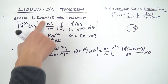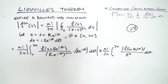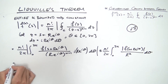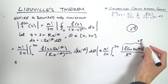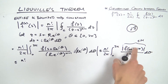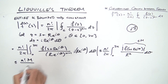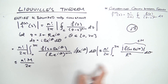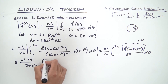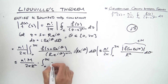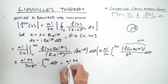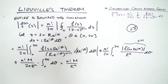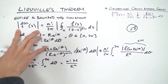Since our function is bounded, we assume an upper bound M on |f|. So |f(s + r·e^(iθ))| ≤ M. We can pull M and r^n out of the integral, and we're left with the integral from 0 to 2π of dθ, which evaluates to 2π. The 2π cancels, leaving n factorial · M / r^n.